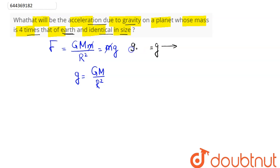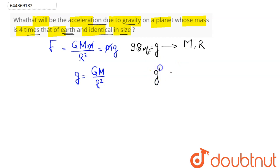...mass is four times that of Earth and identical in size? The value of g on Earth is 9.8 m/s², where the mass of Earth is M and its radius is R. The question asks for the value of g on a planet whose mass is 4M and whose radius is the same R (identical in size).